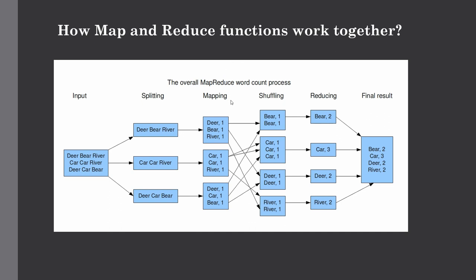But before that, the data will be shuffled in the shuffling phase, where the data is ordered by keys. In this phase, similar keys are grouped together and then passed as input to the reducer function. Here, beer, car, deer, and river — all four words — are grouped together. The intermediate result from the mapper function is then processed by the reducer function and the final output is generated. Aggregation is done: it counts the instances of each word. In this case, it gives the output as the word and the number of times it occurs in the list of words.